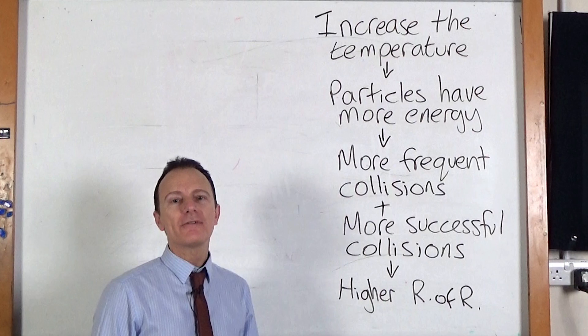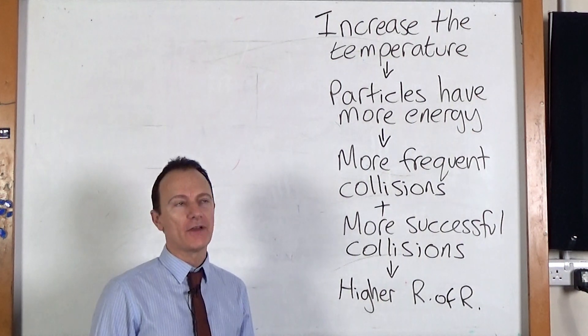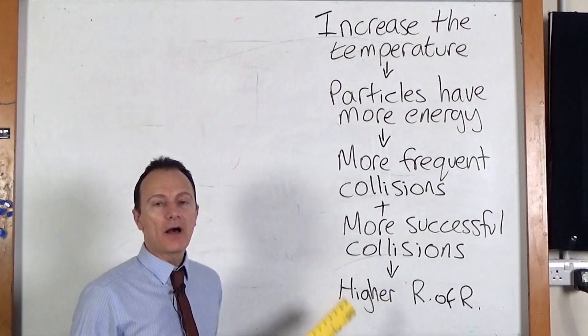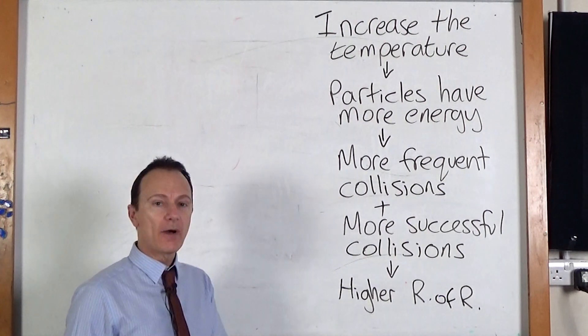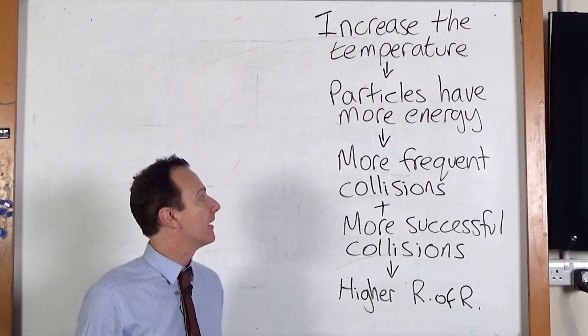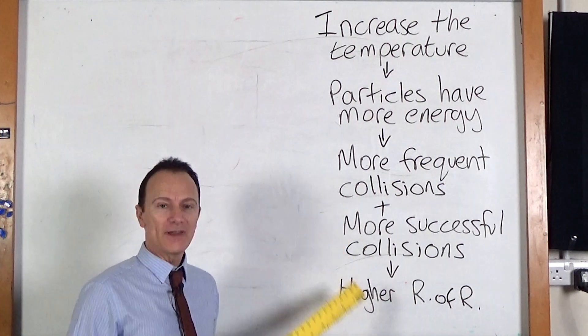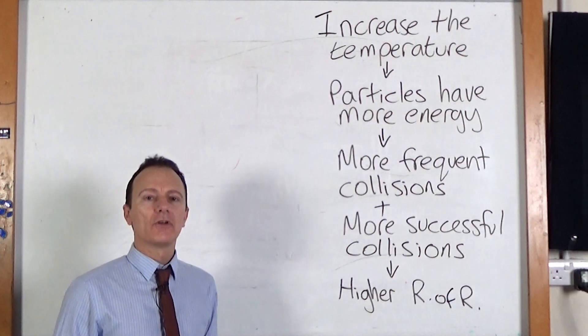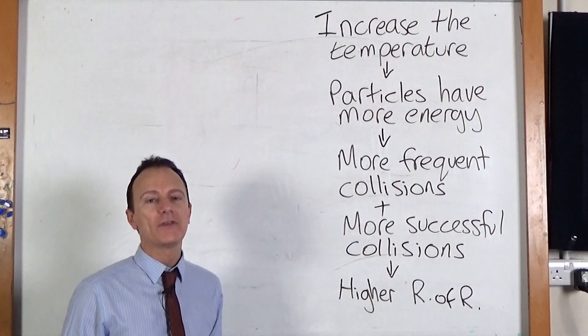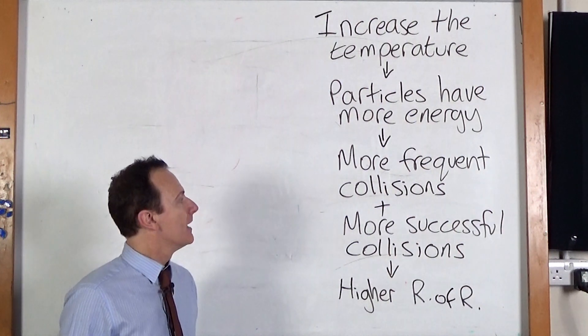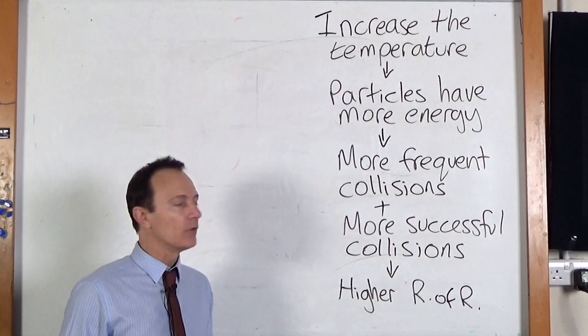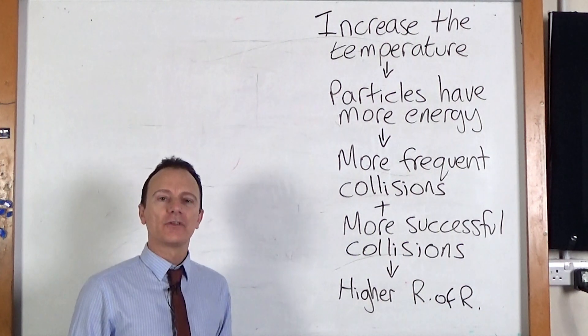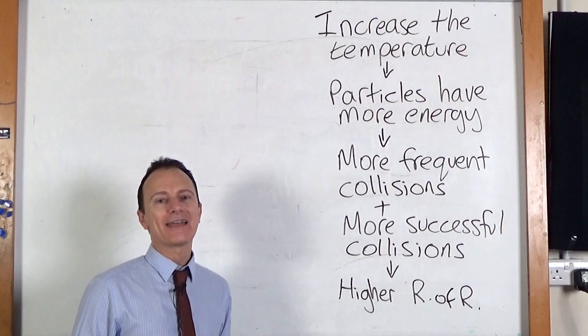So why did the reactants in the warmer water change color first? Well, if we increase the temperature, that means the particles have more energy. So the particles are going to move around a lot quicker. That means there's going to be more frequent collisions, but there'll also be more successful collisions. So rather than the particles just bouncing off each other, they'll actually cause a reaction. And more frequent collisions and more successful collisions mean there'll be a higher rate of reaction. So the reaction was quicker at the higher temperature.